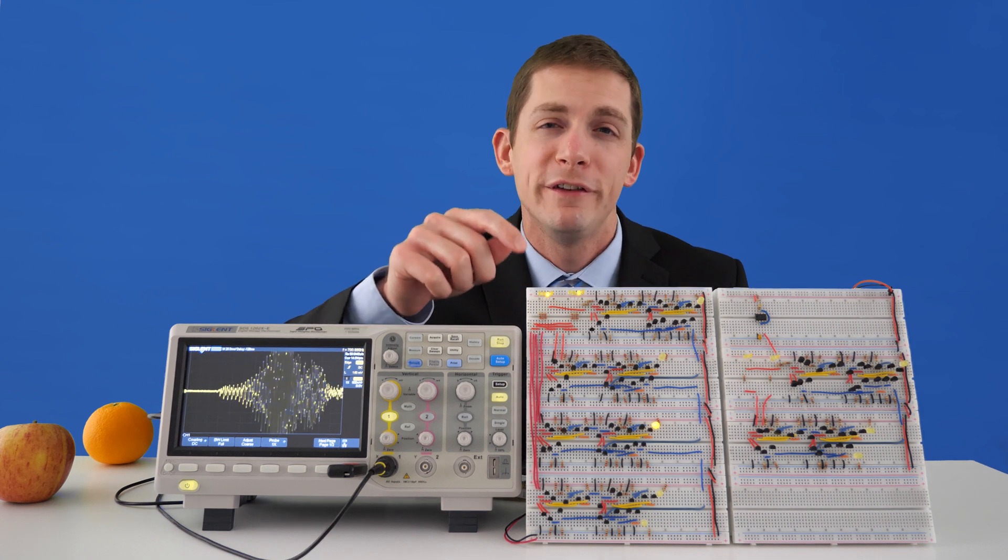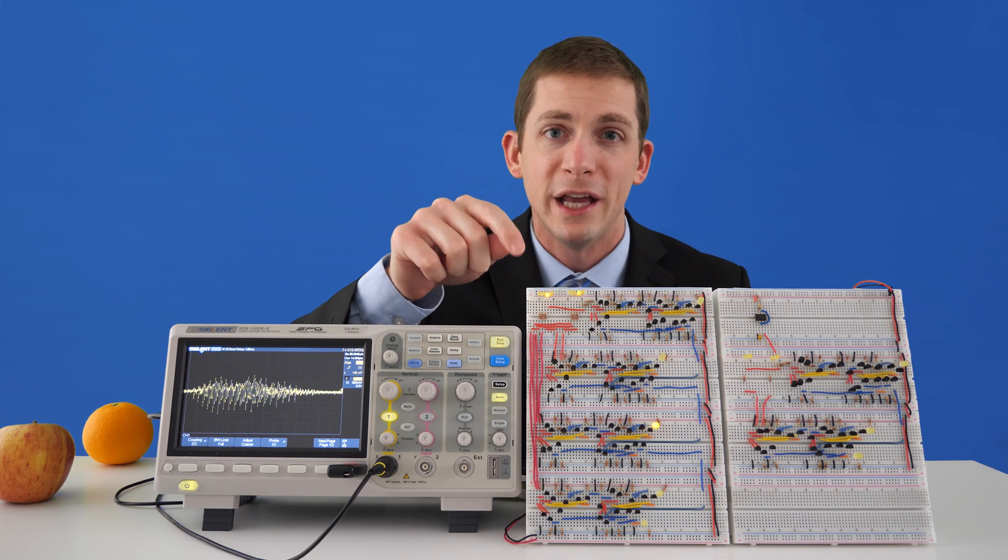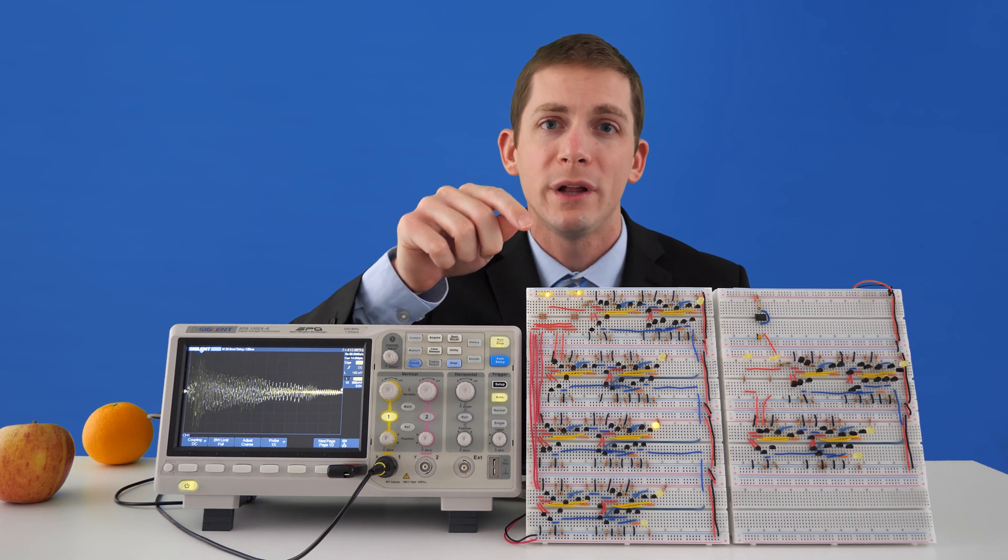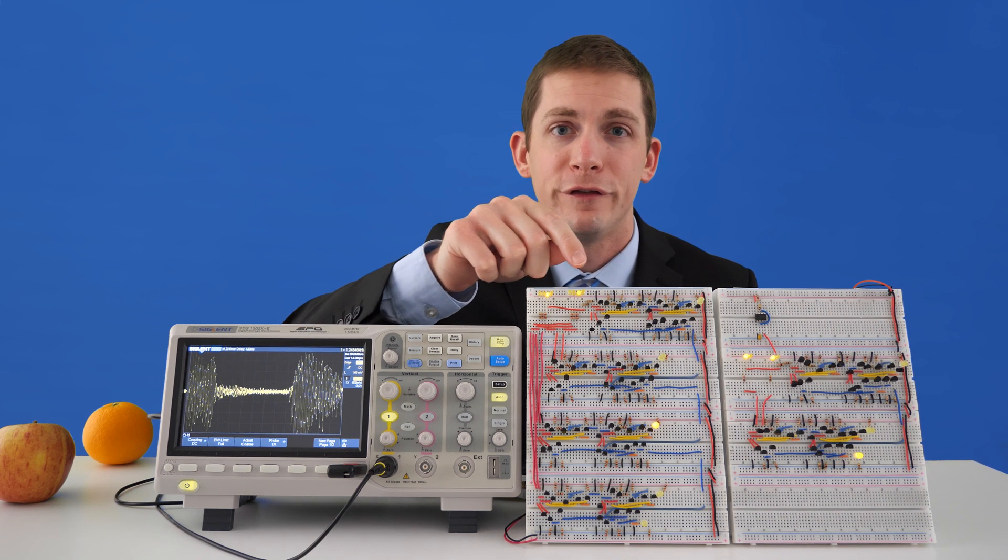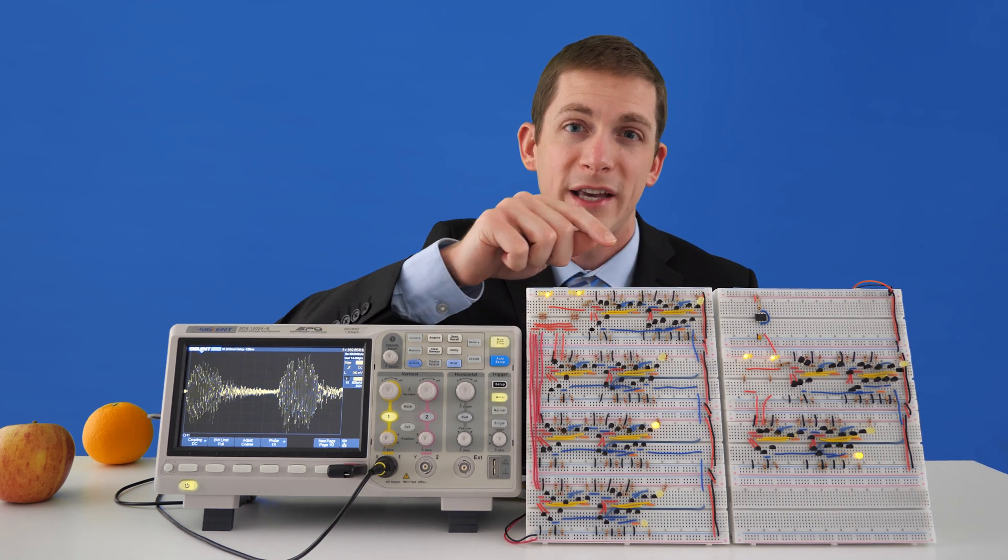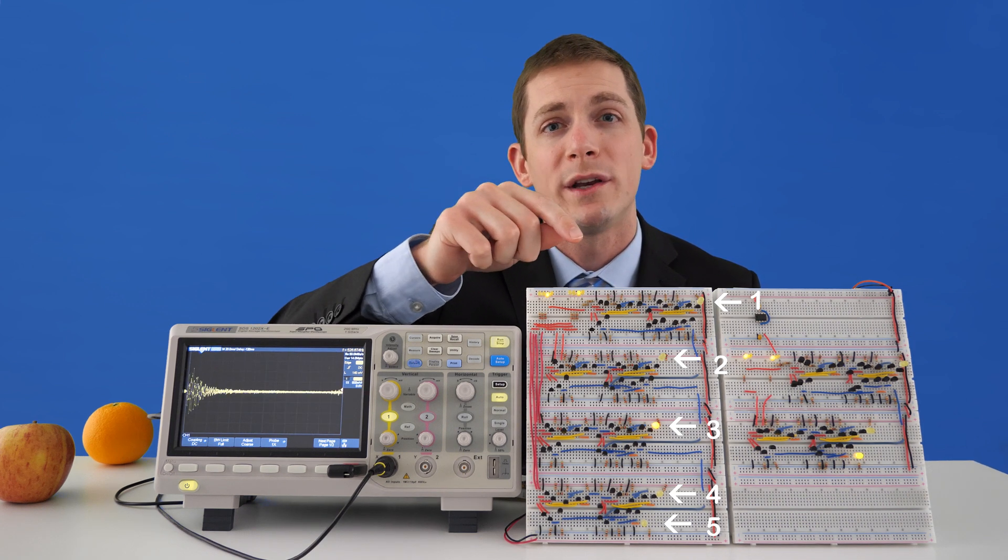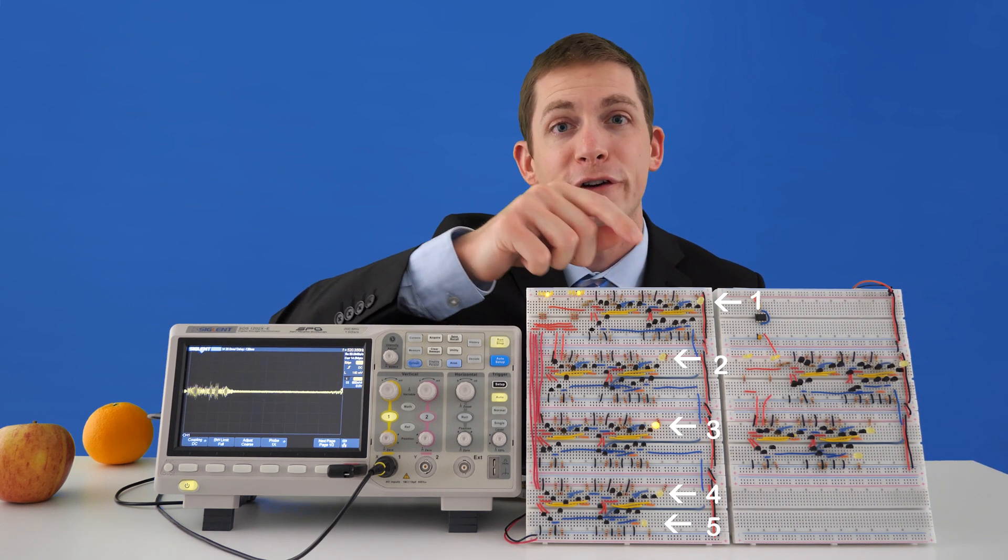Right here, we have a four bit calculator that is built on four individual breadboards. Each breadboard contains one full adder with the output of the full adder creating one bit. Now you'll notice that we actually have five bits as the output because on the last full adder, there's one carry bit that creates the fifth bit.